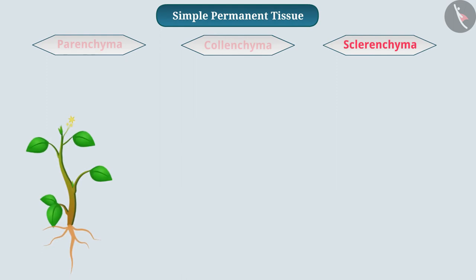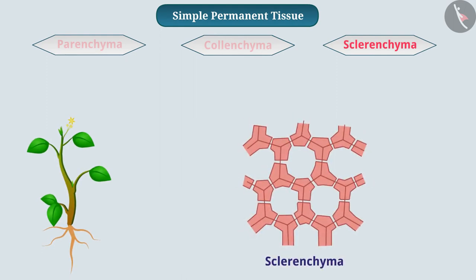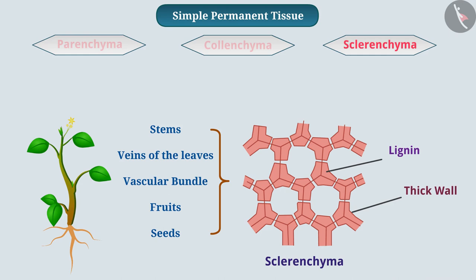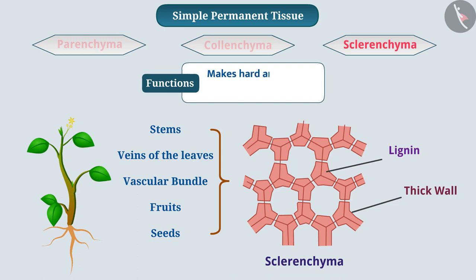Sclerenchyma tissue in plants is present in the stem, veins of the leaves, near the vascular bundle, and in the hard covering of fruits and seeds. Its cells are dead, long, and thin, and lignin is present in their walls. Lignin is a chemical compound that attaches cells to each other. Due to lignin, the walls of cells are very thick and there is no internal space between the cells. Therefore, sclerenchyma makes the plant hard and strong and also protects it.